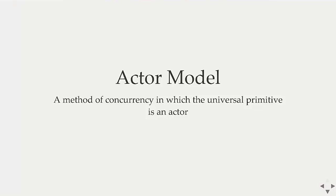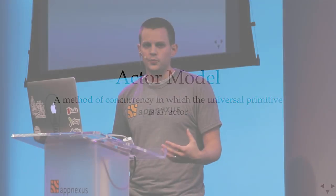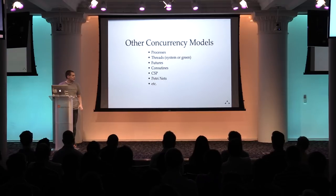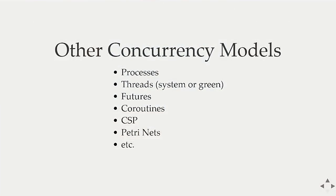A basic definition: the actor model is a method of concurrency in which the universal primitive is the actor. Just like in a threading model the thread is the universal primitive, in the actor model if we have multiple actors, we have concurrency. There are other concurrency models too — futures, coroutines, CSP-style languages like Golang. It's worth looking around at the different models.